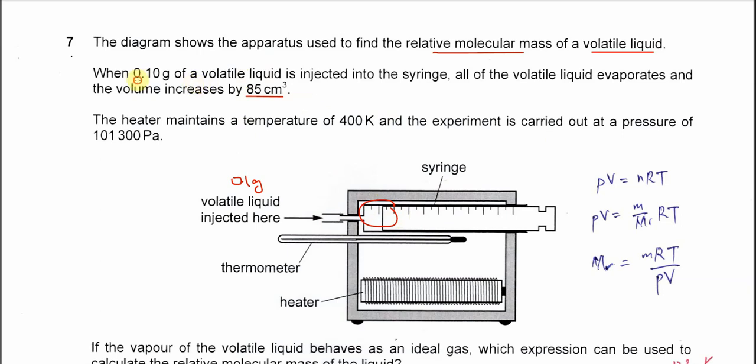So 0.1 gram of the liquid after it's formed gas is 85 cm³, and the heater maintained it at 400 Kelvin. This experiment is carried out at 101300 Pa.